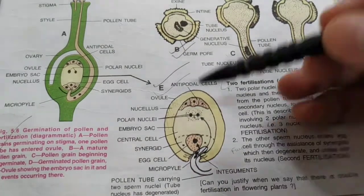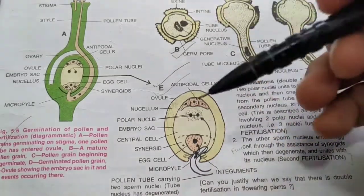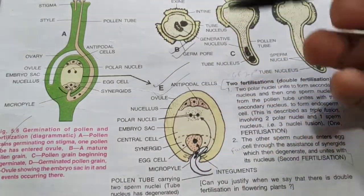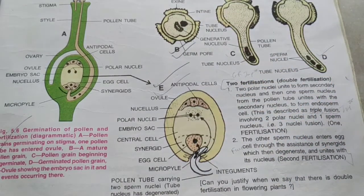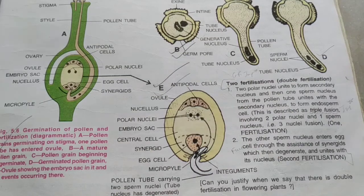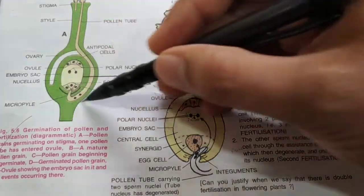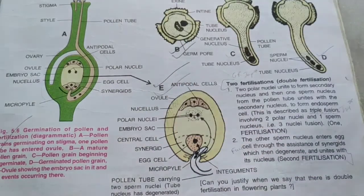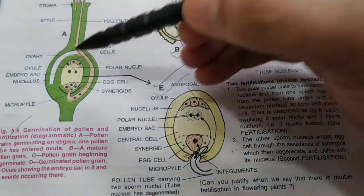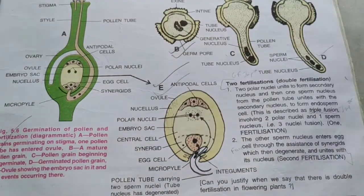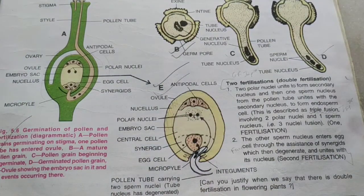After fertilization, let's understand the fate of the various parts of the flower. The petals and sepals wither away, although sepals may remain as some fruits do have green sepals. The ovary becomes the fruit after fertilization, and the ovule becomes the seed. If many ovules have been fertilized, the fruit will have many seeds.